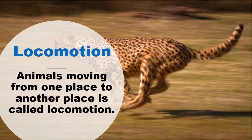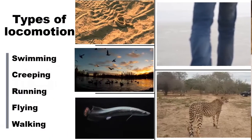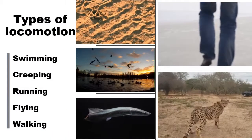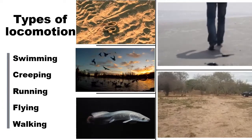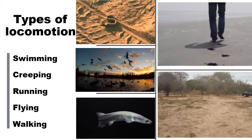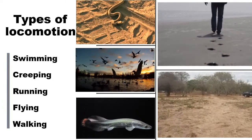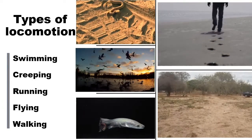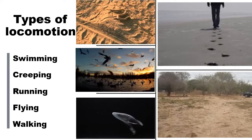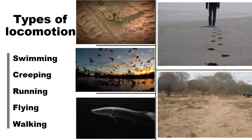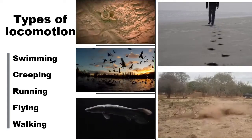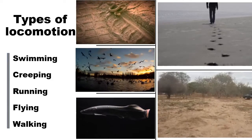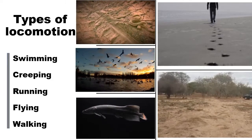Locomotion. Animals moving from one place to another is called locomotion. Types of locomotion include swimming, creeping, running, flying, and walking.